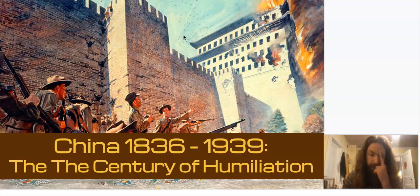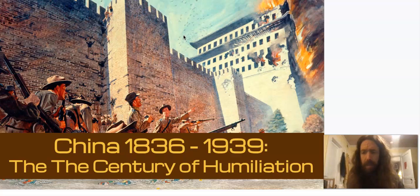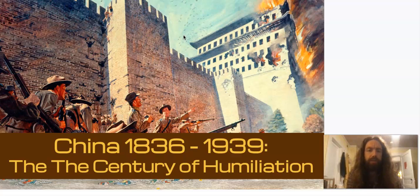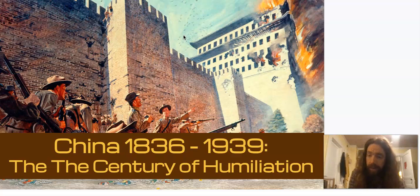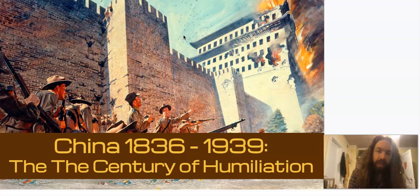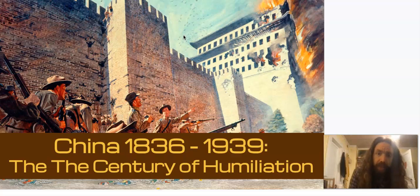In today's video we're going to be looking at China during the age of imperialism, a time period stretching from the Opium Wars to the beginning of World War II, which is sometimes known as China's century of humiliation — because it sees this once great power weakened and beaten by Europeans over and over again and torn apart by internal struggles.